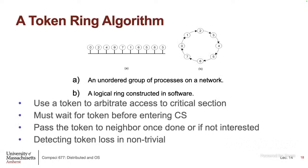Yet another technique: the token ring algorithm — a ring-based approach for distributed locking. This technique actually came from networking, about 30-40 years ago when local area networks were first being designed. There were two competing technologies: Ethernet and token ring. When you bought a PC in those days, you had to decide which environment it would connect to — either an Ethernet card or a token ring card. Ethernet eventually won, and token ring faded away, but it was a good technique in its day.